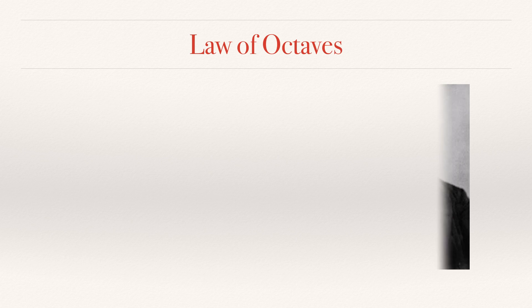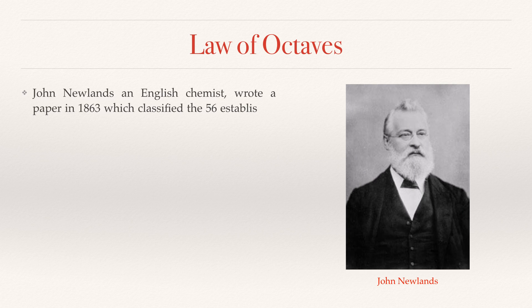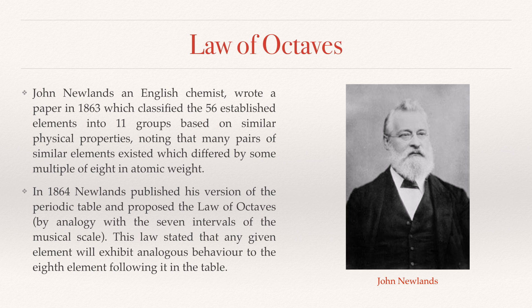Law of Octaves. John Newlands, an English chemist, wrote a paper in 1863 which classified the 56 established elements into 11 groups based on similar physical properties, noting that many pairs of similar elements existed which differed by some multiple of eight in atomic weight.